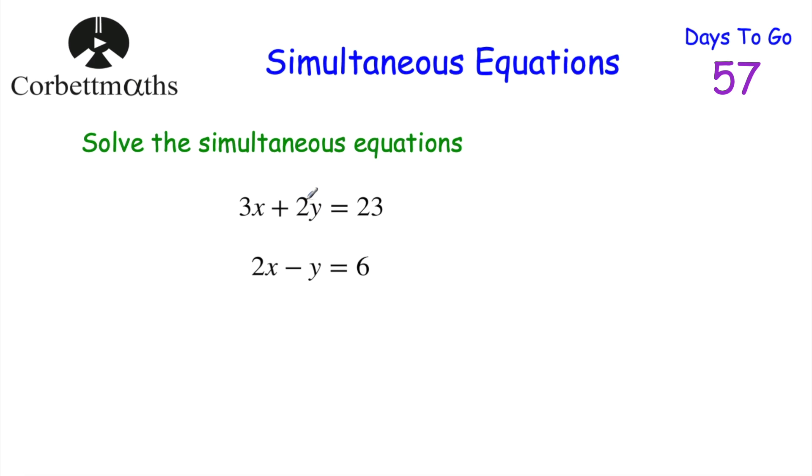Now, if we have a look, we've got 2y in the first equation and minus y in the second equation. If we double the bottom equation, we would get minus 2y.